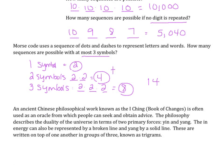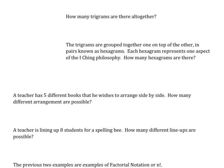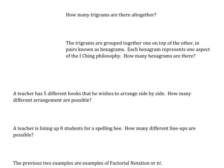An ancient Chinese philosophical work known as the I Ching Book of Changes is often used as an oracle from which people can seek and obtain advice. The philosophy describes the duality of the universe in terms of two primary forces, yin and yang. Yin energy can be represented by a broken line and yang by a solid line. These are written on top of one another in groups of three, known as trigrams. Since a trigram has three positions each with two options, we have two times two times two, so there are eight trigrams altogether.